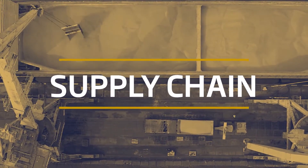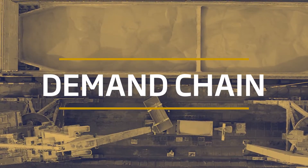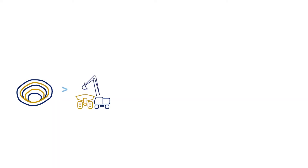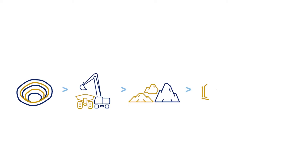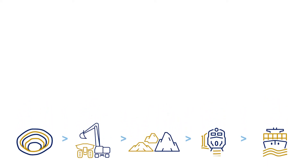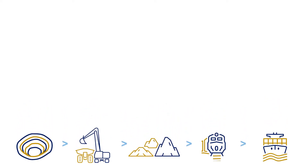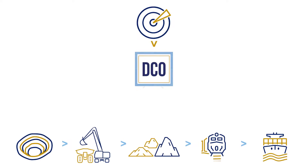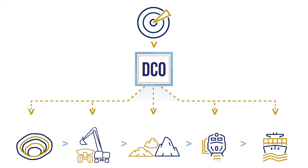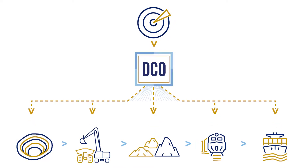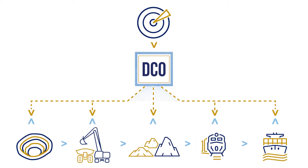The terms supply chain and demand chain are often used interchangeably, but they're actually quite different. A supply chain looks at how material moves through your different processes and logistics all the way through to the destination from the perspective of the source of that material. Whereas a demand chain turns that on its head — it looks at what is required at the destination and when it's required, and works backwards from there to determine what needs to happen at all the different stages throughout the process to deliver the correct material on time and on spec.